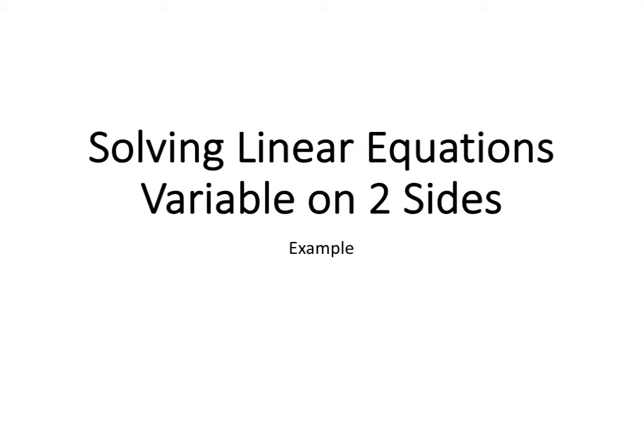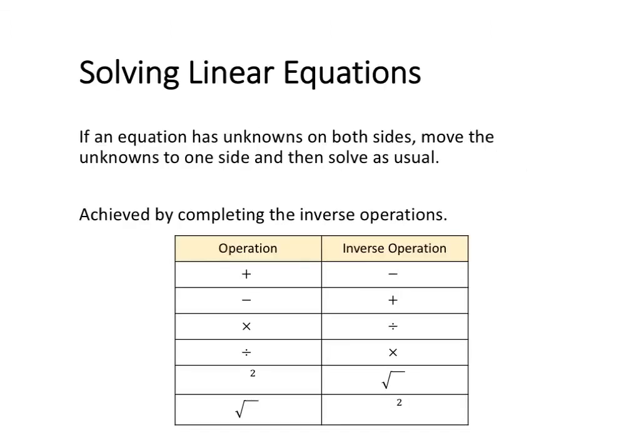In this video, we're going to look at how to solve linear equations to find an unknown variable where that variable appears on both sides of the original equation. If we've got an equation with an unknown variable on both sides, the first step is to move the unknown variables onto one side and then solve the equation by rearranging and doing our inverse operations.